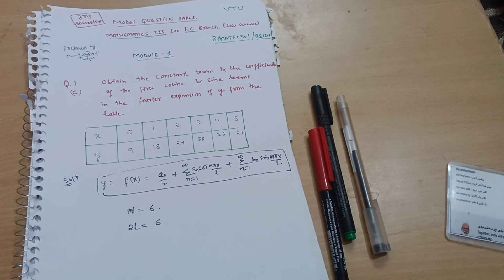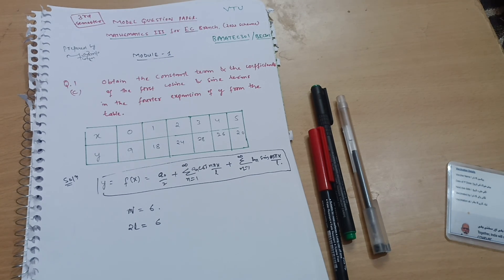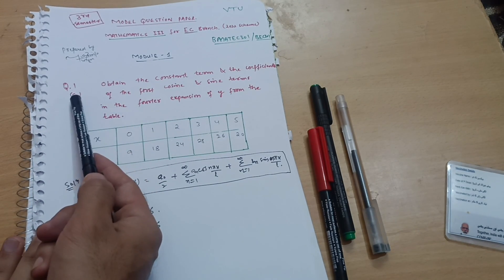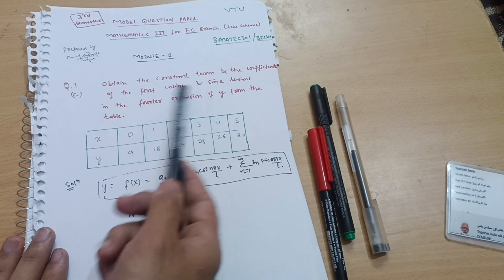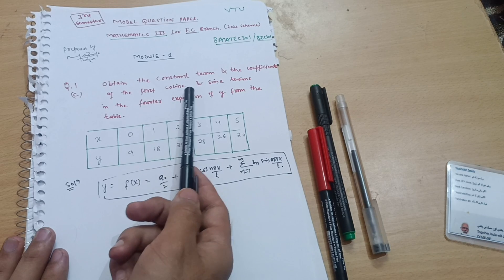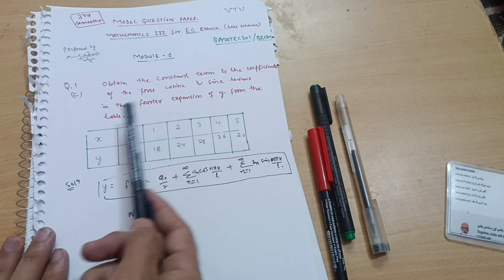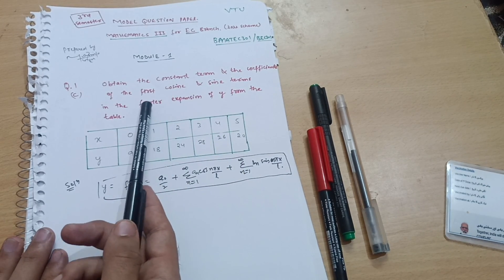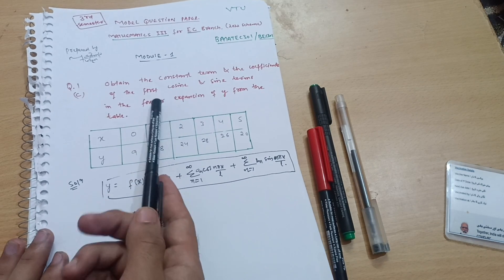Welcome back, dear friends, to another lecture of Mathematics Third for the third semester, especially for the EC branch. We are discussing the model question papers. Today I am with another question — question number one. I have already uploaded two questions on this particular Fourier series model one; I have provided the link in the description box. So let's start this video with the very first question, that is C part: obtain the constant term and the coefficients of the first cosine and sine terms in the Fourier expansion of y from the table. It is also called harmonic analysis.